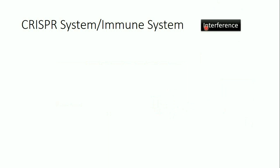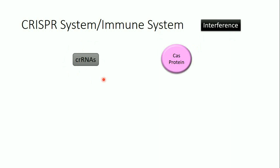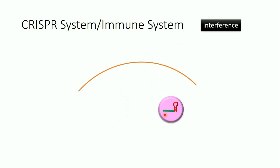Now let's move to the third step: the interference, which differs between the three types. In general, the CRISPR RNAs are integrated with the Cas protein to form a complex containing the Cas protein with the CRISPR RNA inside. The interference involves a specific Cas protein and the RNA sequence merging together to form this complex.